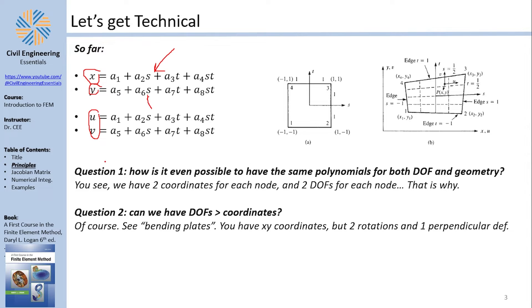Question one: how is it even possible that we have the same equations for both u and x as well as y and v? The reason behind that is because each node has two properties or coordinates and each node has two degrees of freedom. And since the number of coordinates and the number of degrees of freedom are the same, I can use the same functions to approximate both. The second question that might come into mind is, can we have an element where the degrees of freedom are more than the coordinates? And the answer is yes, you can.